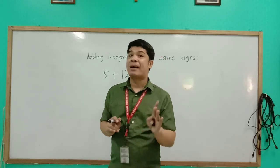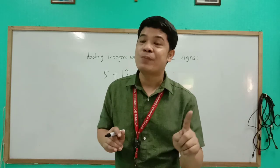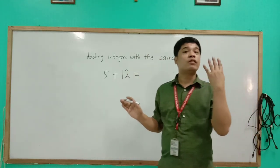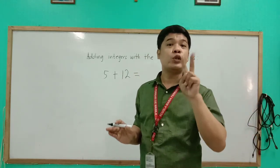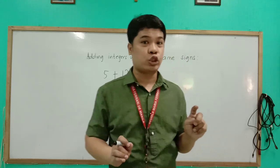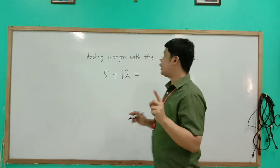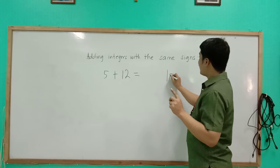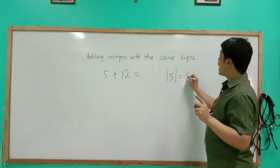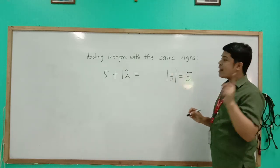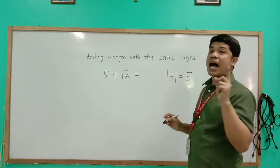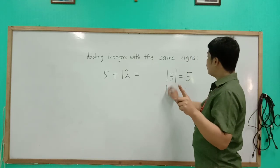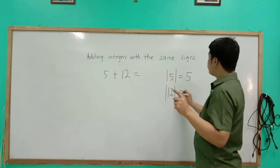So let's now start. First, we are going to find the absolute values of the two given integers. The absolute value of positive 5 is just 5, and the absolute value of positive 12 is just 12.